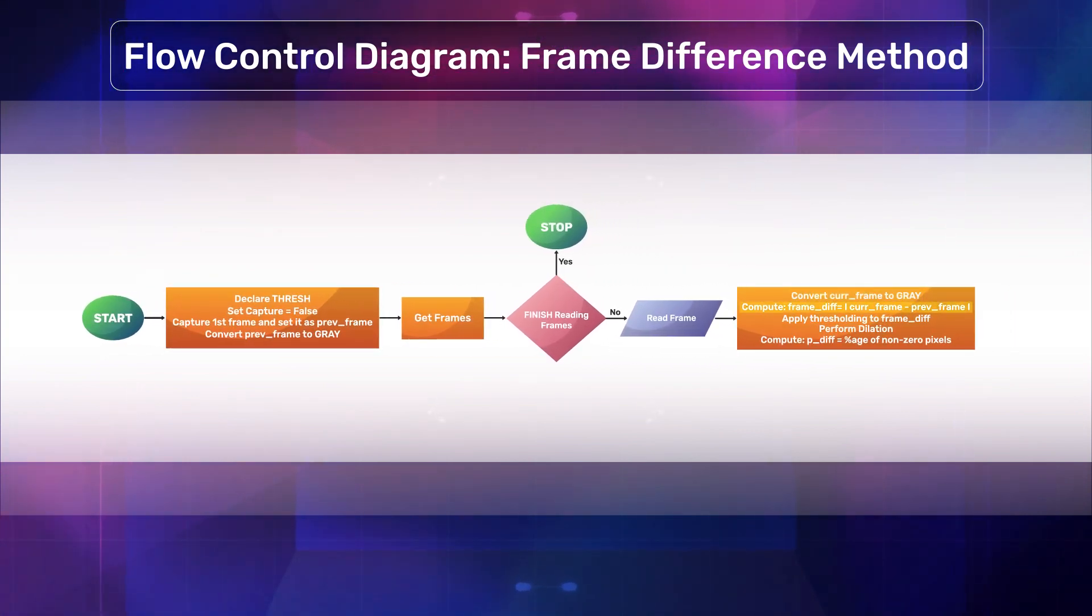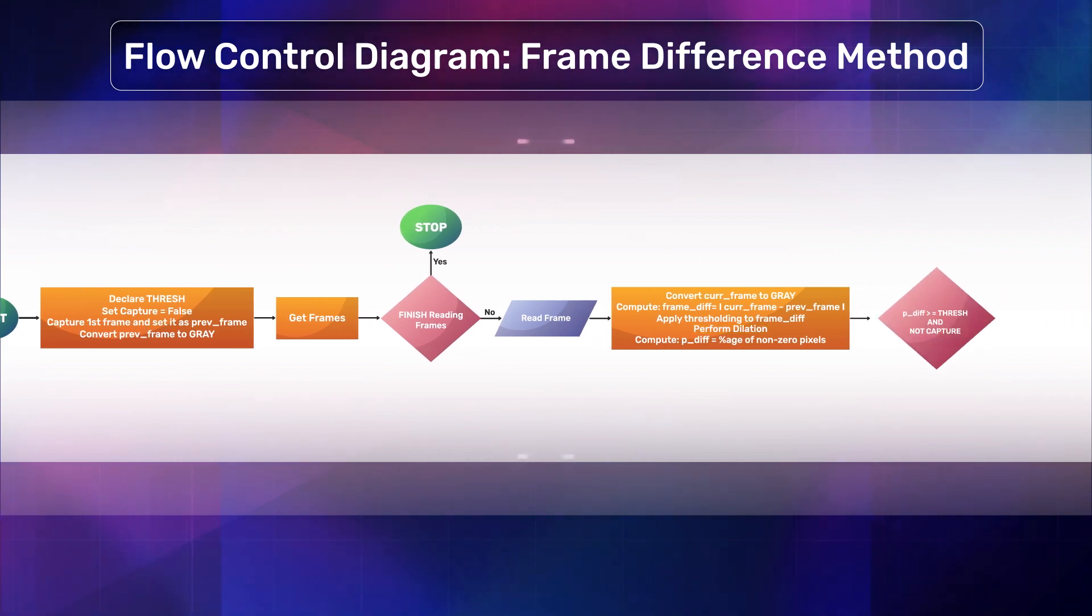Next we need to compute the frame difference and apply thresholding so all the values are either 0 or 255, and apply dilation before computing the percentage of white pixels in the morphed image. During experimentation, we realized applying dilation significantly improves the results and helps capture the motion better.